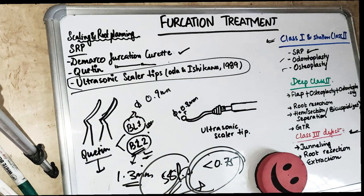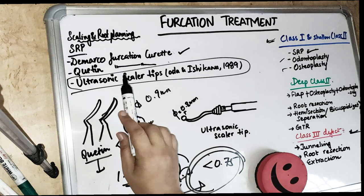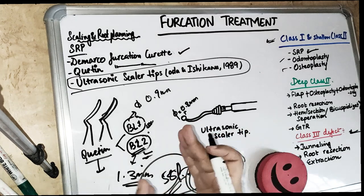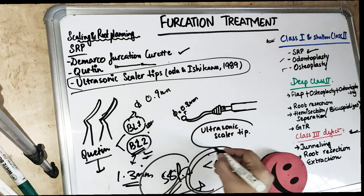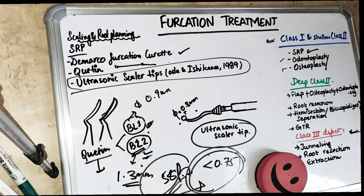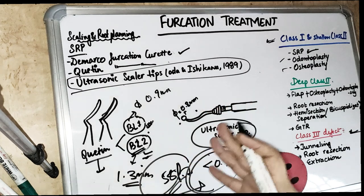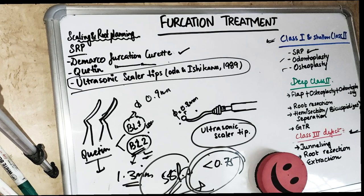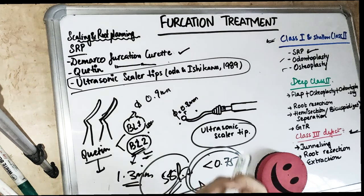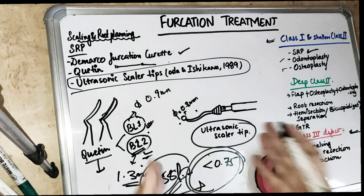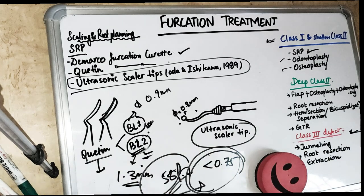The ultrasonic scaler tips are given by Oda and Ishikawa. These scaler tips are made of specially designed acid-resistant stainless steel. They have a ball or sphere at the end with a diameter of 0.8 millimeters, which protects the root surface and soft tissue from injury. The tip is a spiral with a radius of curvature of 9 millimeters, rotating in both clockwise and anti-clockwise directions. They are used for narrow furcation defects as they can go anywhere easily.